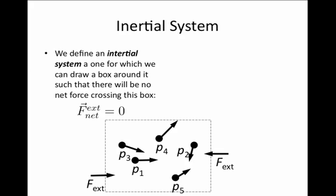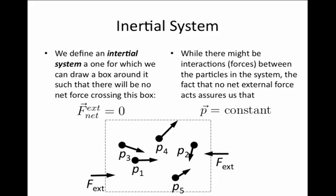In other words, any force coming in from the left is balanced by some force coming in from the right, or any force coming in from the top is balanced by some force coming in from the bottom. If we can find such a system and such a box that we can draw around it in which the total force crossing the boundary is zero, then momentum for the system will be a constant.